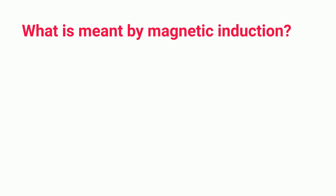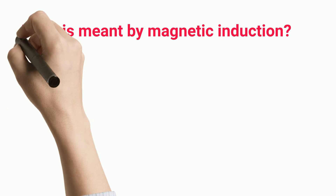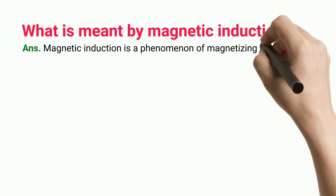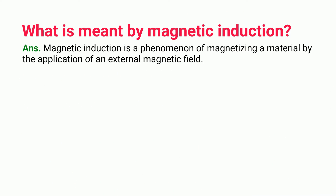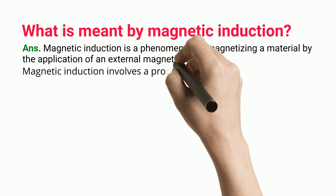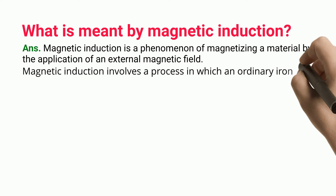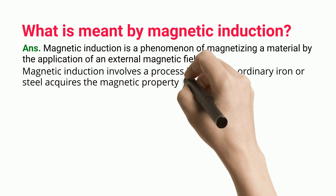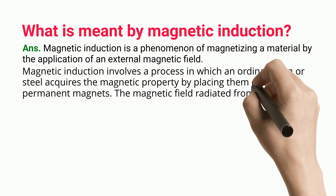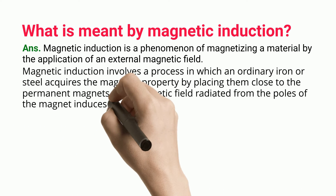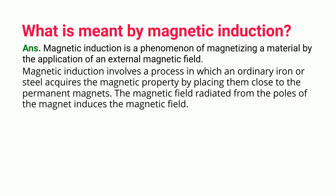What is meant by magnetic induction? Magnetic induction is a phenomenon of magnetizing a material by the application of an external magnetic field. It involves a process in which ordinary iron or steel acquires magnetic properties by placing them close to permanent magnets. The magnetic field radiated from the poles of the magnet induces the magnetic field.